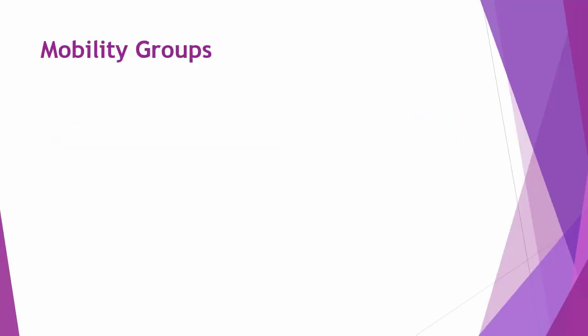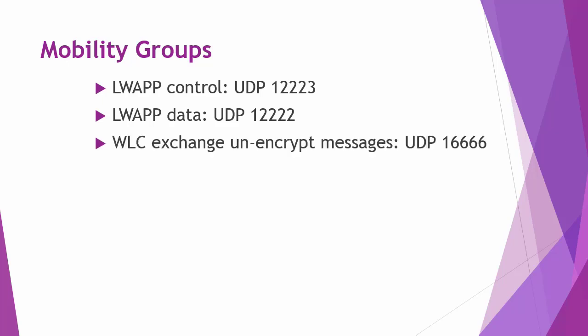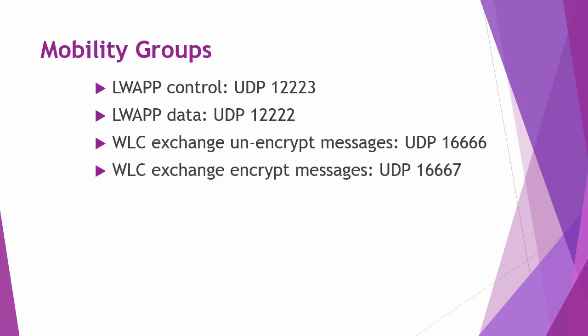You may be tested on the following communication ports for mobility groups: lightweight access point protocol control uses UDP 12223; lightweight access point protocol data uses UDP 12222; wireless LAN controller exchange of unencrypted messages uses UDP 16666; and wireless LAN controller exchange of encrypted messages uses UDP 16667.